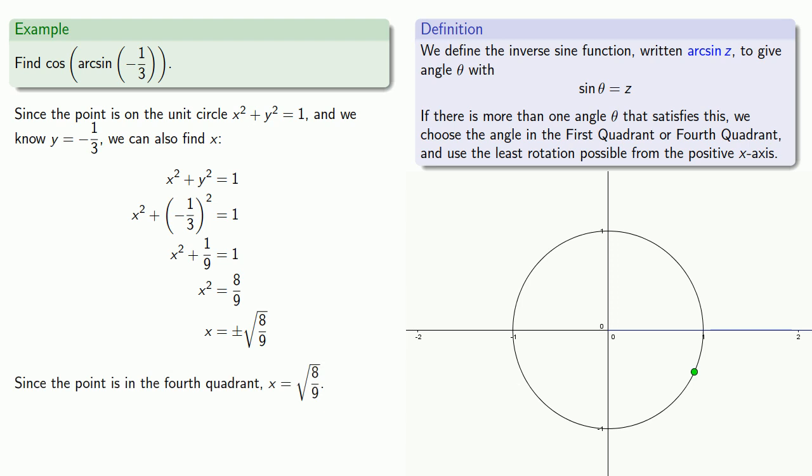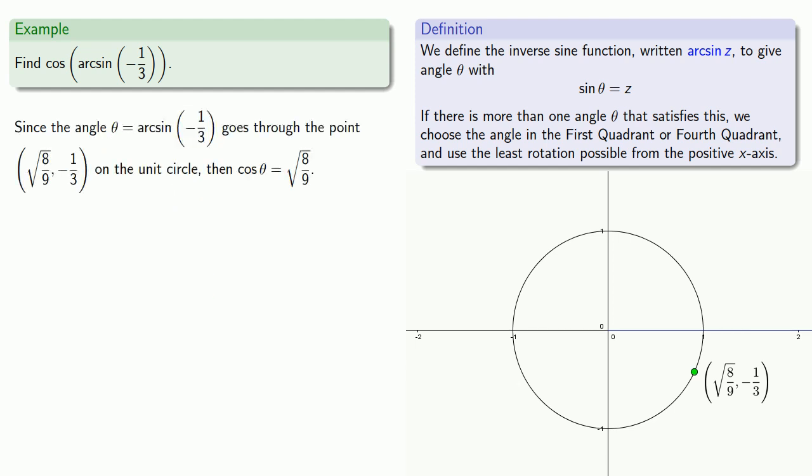This gives us the coordinates of the point, square root of 8 over 9, minus 1 third. And remember, if it's not written down, it didn't happen. Let's write down the coordinates of the point. Now, since the angle theta, which is the same as arcsine of minus 1 third, goes through the point square root of 8 ninths, minus 1 third on the unit circle, that means the cosine of theta is square root of 8 ninths.